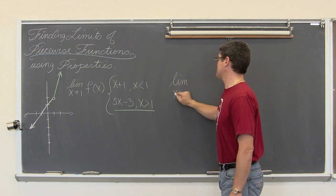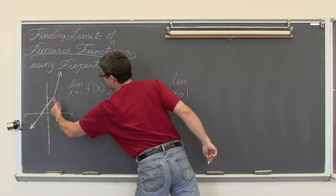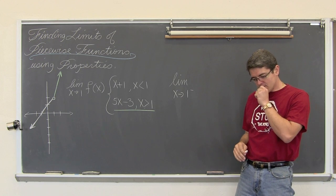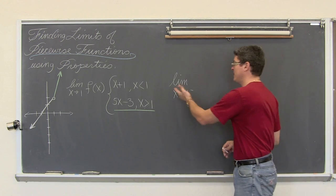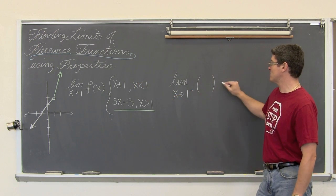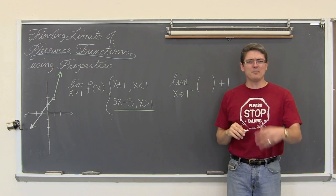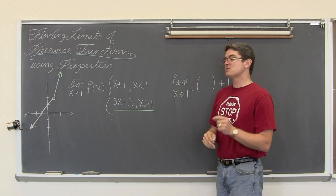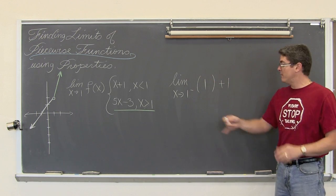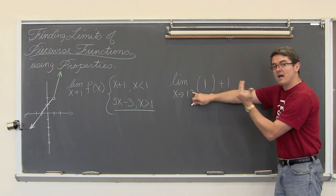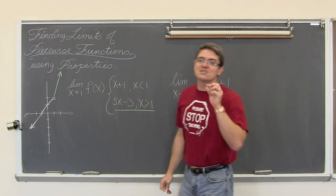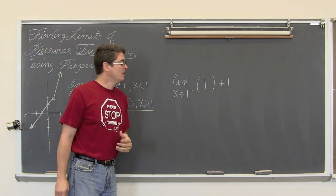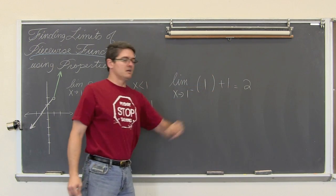The limit as x approaches 1 from the left — when you are approaching 1 from the left, your x values are smaller, less than 1, so we are using the x values that are less than 1. It is infinitely close to 1 from the left, so we are going to use the first function because that is where x is less than 1. A limit is letting x approach infinitely close to a. So while I am going to put 1 into my work, this notation says that we are letting x approach 1 from the left — it is just not quite 1, it is infinitely close but on the left. So we are using that first function, and this comes out to be 2. Our left-hand limit is equal to 2.